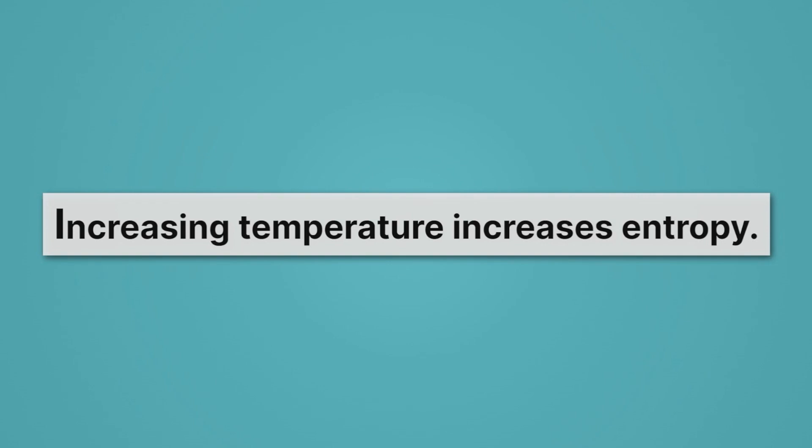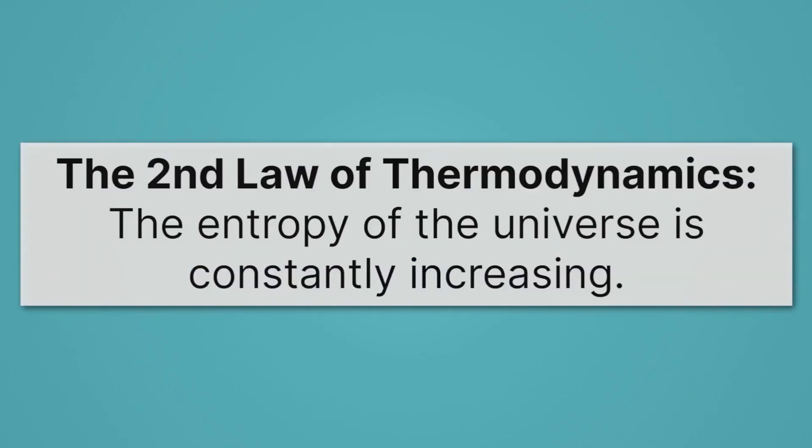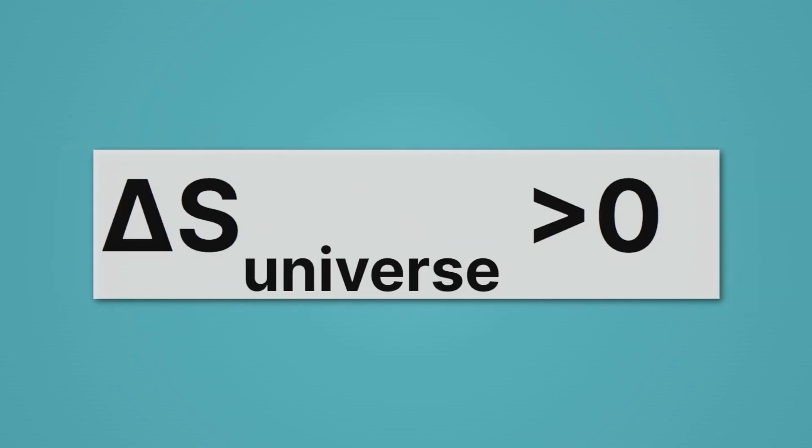All right, let's now go all the way back to reading the second law of thermodynamics. It says the entropy of the universe is constantly increasing. That means things are generally going from structured to less structured. We can state this mathematically: delta S of the universe is greater than zero. Remember, that Greek letter — that triangle — means change.